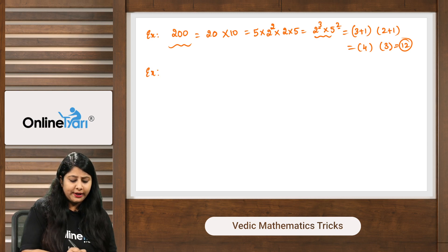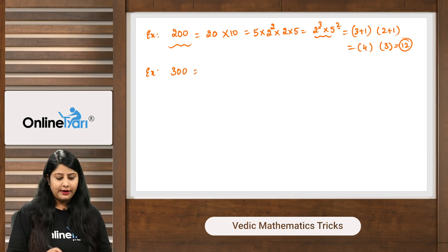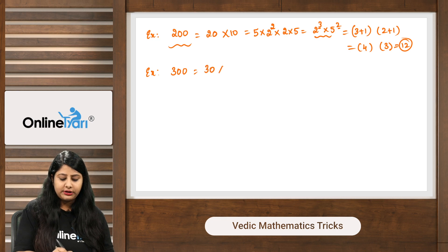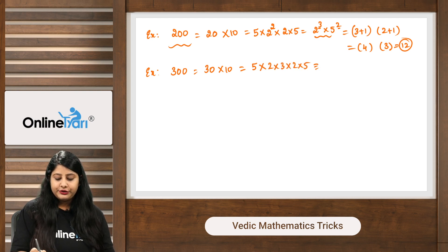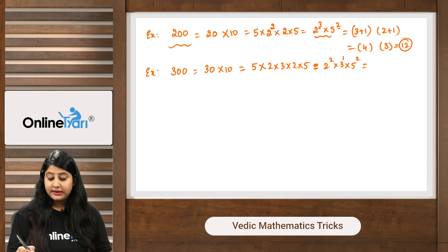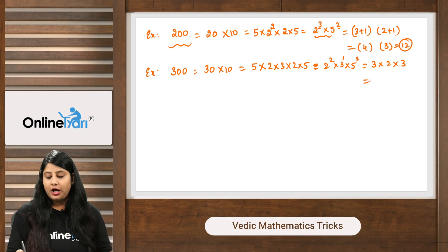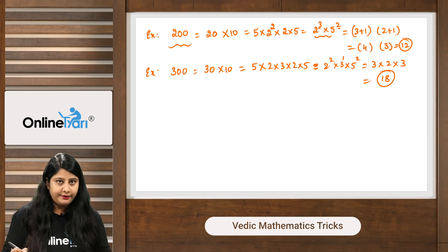One more example: 300. Write 300 = 30 × 10. Then 30 = 5 × 6 = 5 × 2 × 3, and 10 = 2 × 5. So 300 = 2² × 3¹ × 5². Powers are 2, 1, and 2. Add 1 to each: 3, 2, 3. Multiply: 3 × 2 × 3 = 18. So 300 has 18 factors.